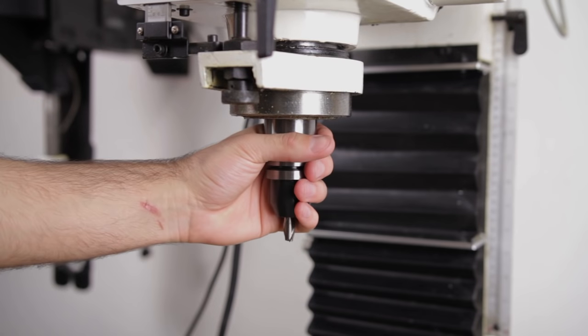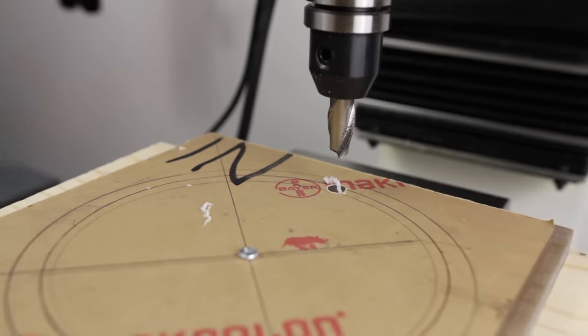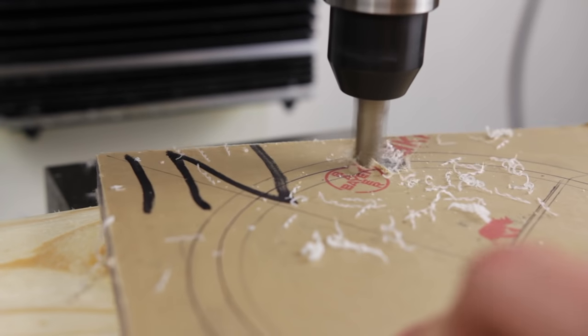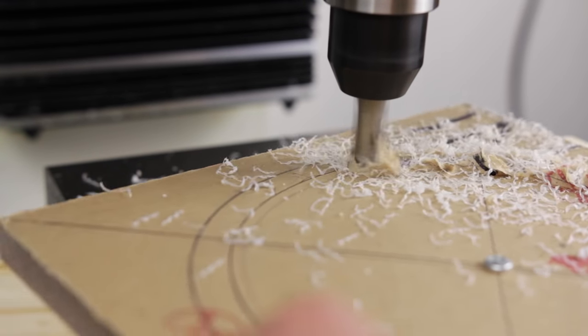I then insert the end mill and take the depth of cut of about 30 to 50 thousandths of an inch per pass. This is roughly about the thickness of 3 to 4 business cards.